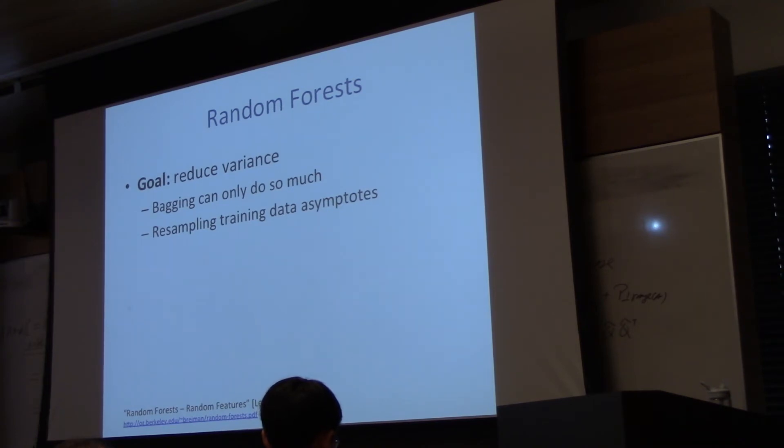So the goal of bagging is to reduce variance, and in many ways, bagging can only do so much because it's resampling entire data points. And resampling entire data points tends to asymptote. Like if I do 100 resamples, so if I had access to the ideal aggregate where I could just draw new samples from the training set, then every new sample from the training set I get, I decrease the variance more and more. Whereas bagging, the variance reduction asymptotes. Like if I drew 100 bootstrap samples, I might do about as well as if I had drawn 1,000 bootstrap samples.